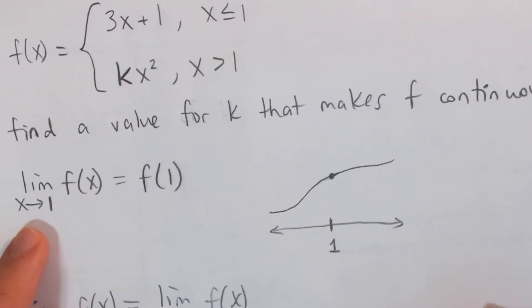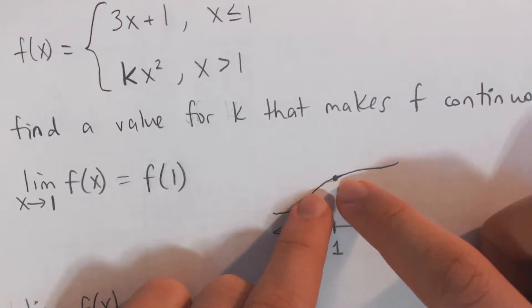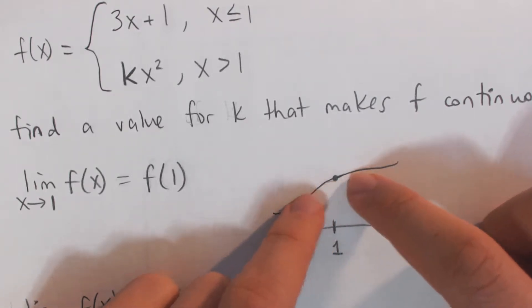And so in other words, the limit as x approaches 1, as we go close to 1 from either side, we want it to approach the same value. Those limits have to be equal for this limit to exist, limits from each side have to be equal.